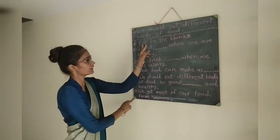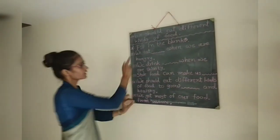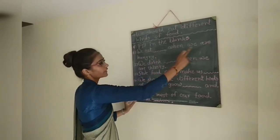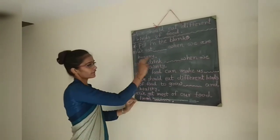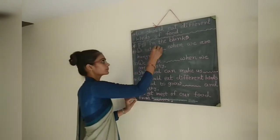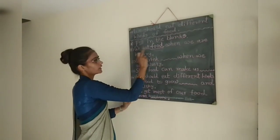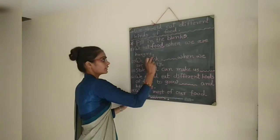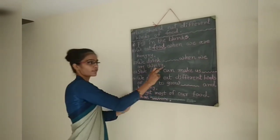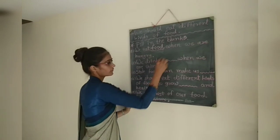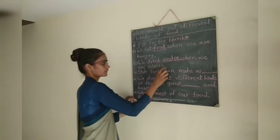Fill in the blanks. Number 1: We eat blank when we are hungry. The answer is: We eat food when we are hungry. Number 2: We drink blank when we are thirsty. The answer is: We drink water when we are thirsty.